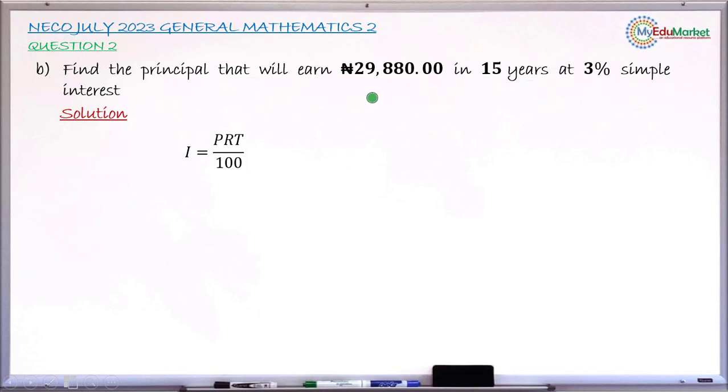This will enable us to find the principal, which is P. Substituting, 29,880 equals P, which we are looking for, multiplied by 3, which is your R, multiplied by 15, which is your T, divided by 100.